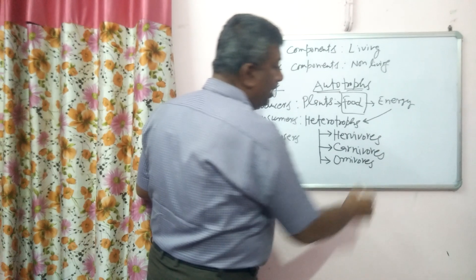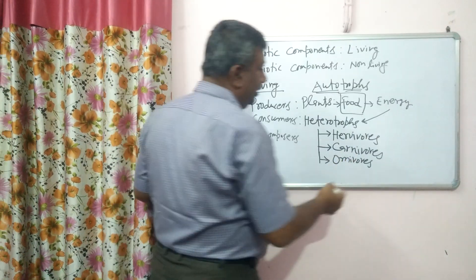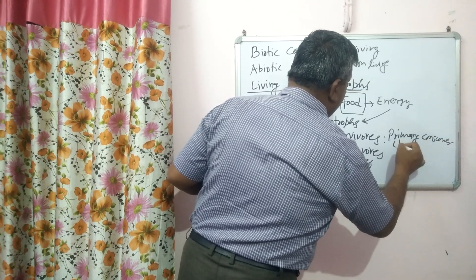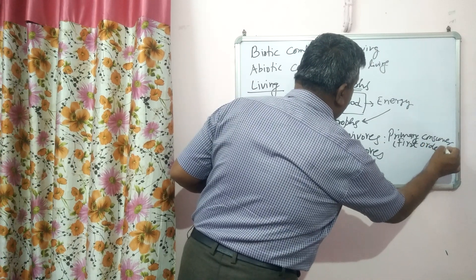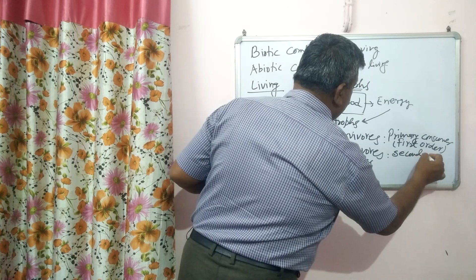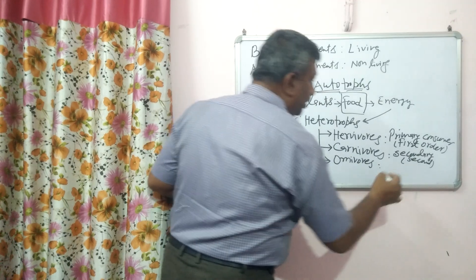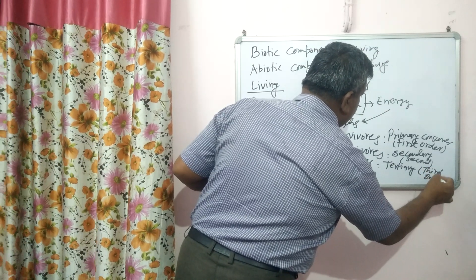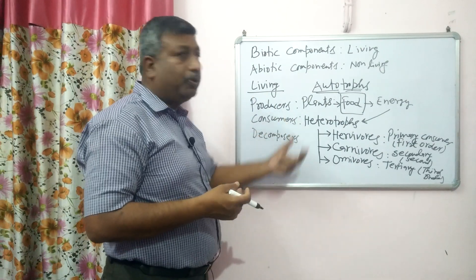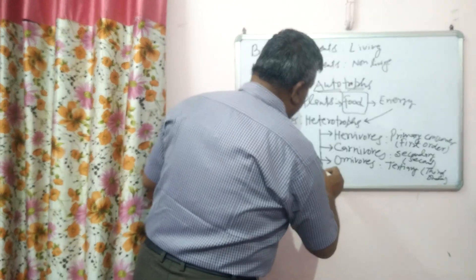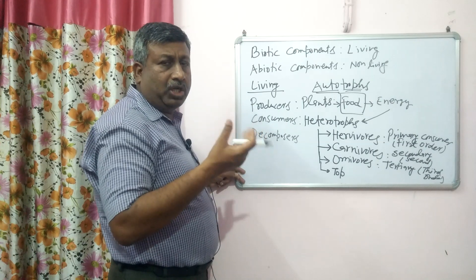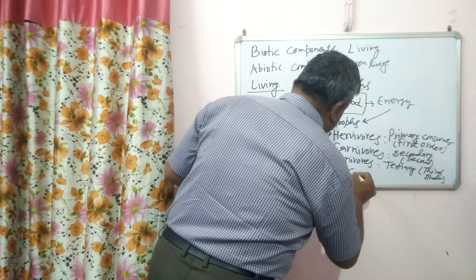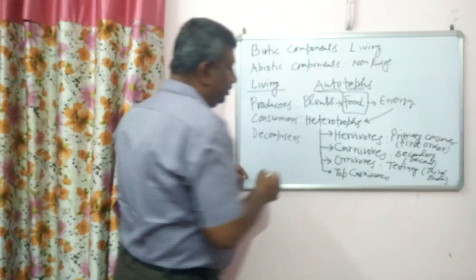These are called primary consumers, also known as first order consumers. Those which feed on herbivores are called secondary consumers or second order consumers. And those above them are tertiary consumers or third order consumers. If some species are above all of these, they are called top carnivores — like lions and tigers — which no other animal eats.